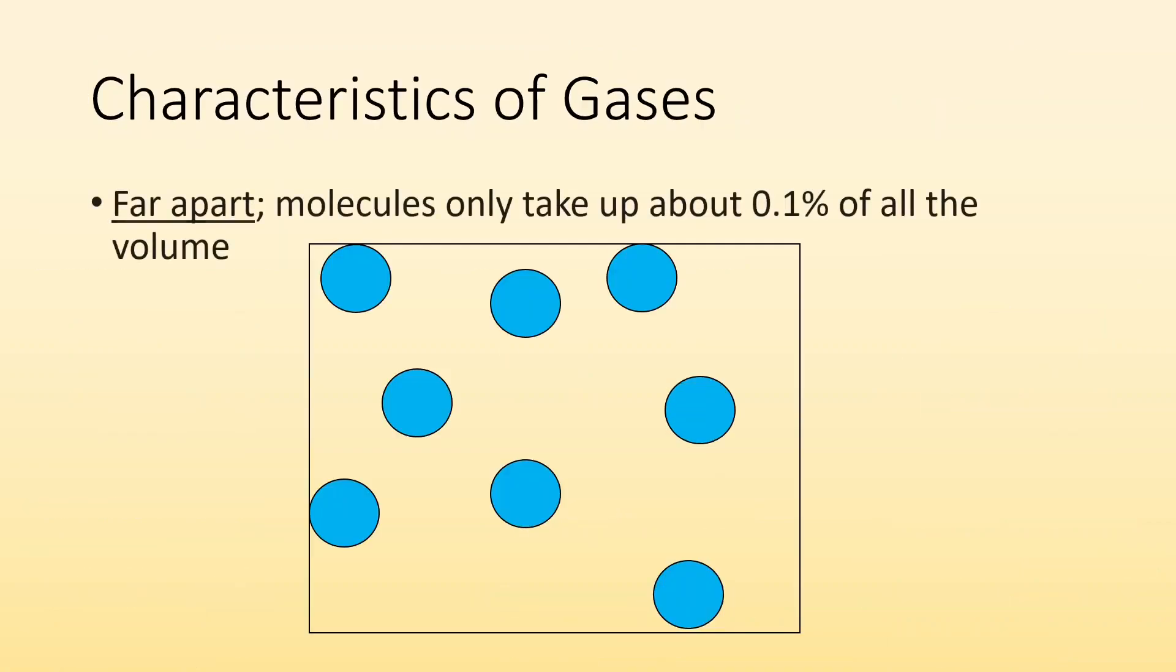So some more characteristics of gases. The particles are really far apart and they're really small compared to the volume of the container. The molecules only take up about 0.1% of the whole volume. So you'll often see pictures that look like this showing that hey there's a whole lot of space in between them but in reality there's even more space in between them. Those particles are significantly smaller than what you see in most particle diagrams.